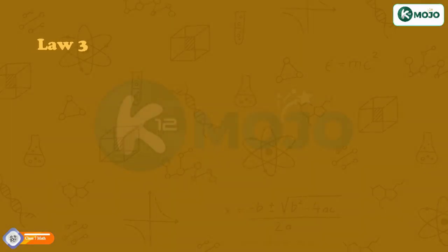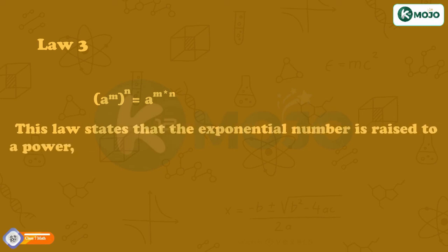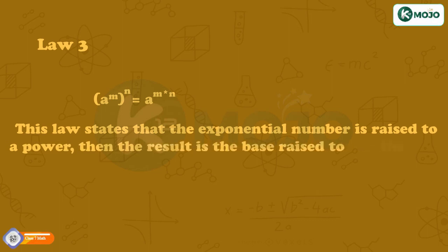Law three: a raised to the power m, n is equal to a raised to the power m into n. This law states that when an exponential number is raised to a power, the result is the base raised to the product of the two exponents.